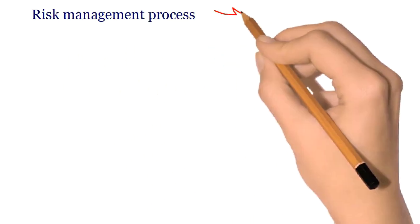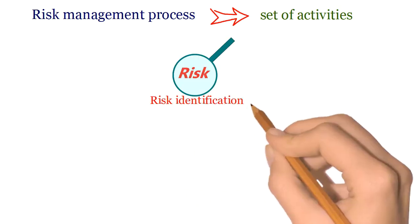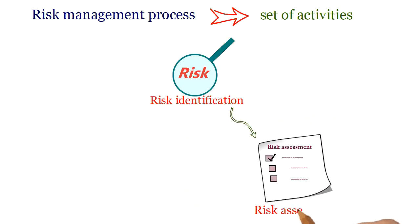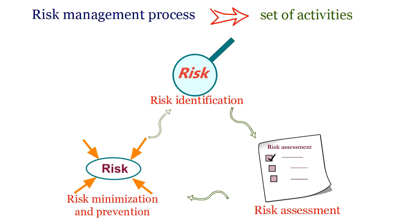So what activities are included in risk management process? Risk management process is a set of activities which mainly includes risk identification, risk assessment, and risk minimization and prevention. Thus risk management system includes assessment of risks associated with a medicine and minimization of that risk through defined activities and interventions.